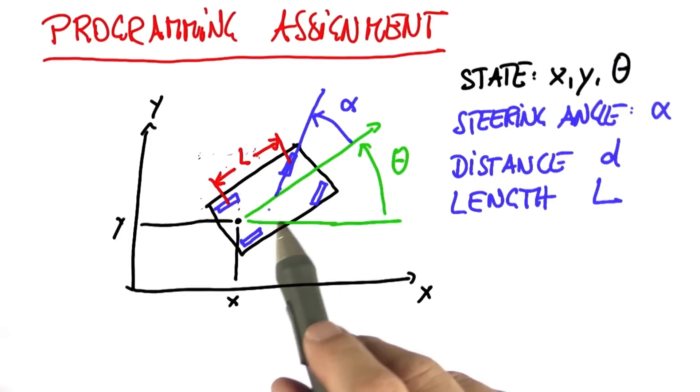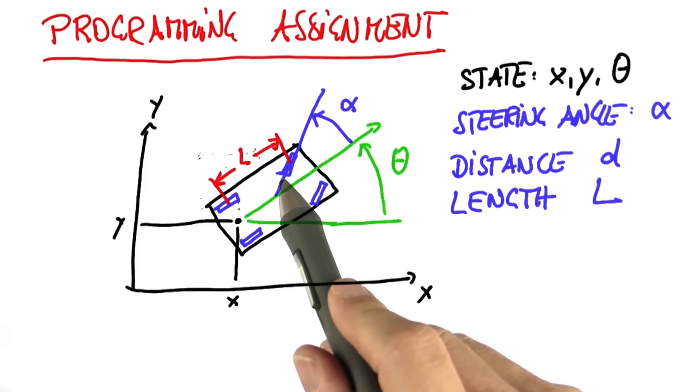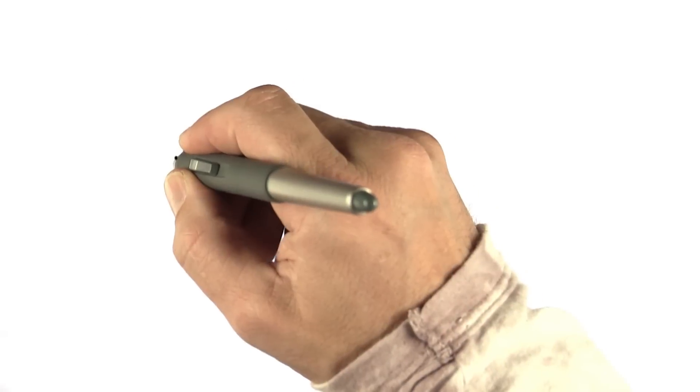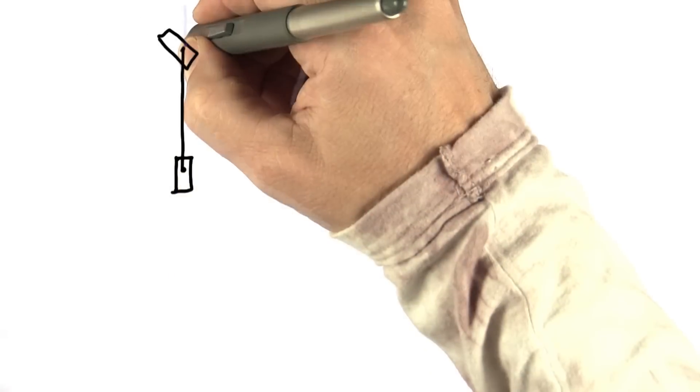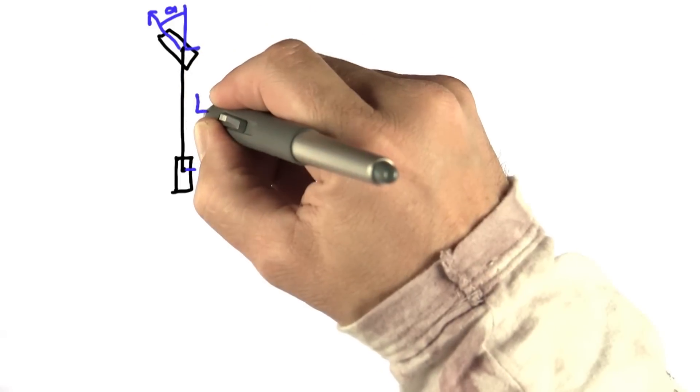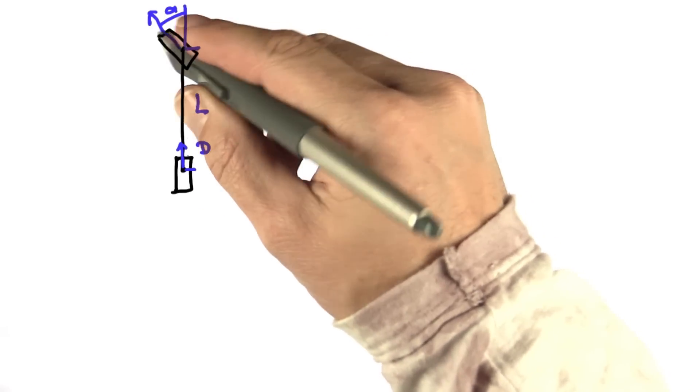This is usually called a bicycle model. Obviously, it suffices to look at one pair of tires because the other one, at least in approximation, runs pretty much parallel. So if you look at the robot locally, where we have a steering angle alpha, robot length L, and we're driving the rear tire forward by distance d, then the robot will turn to the left.